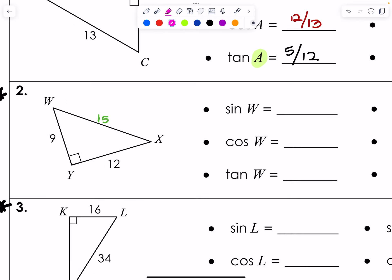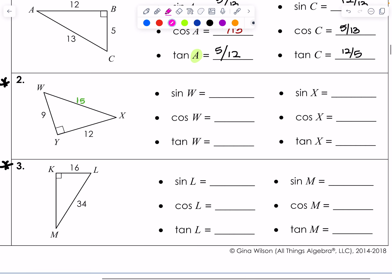So this side is 15. I'll do a few of these. Starting with sine of W — W is right here. Sine is SOH: opposite over hypotenuse. So opposite is 12 over the hypotenuse, which is 15. But the directions say I want it in its most reduced form. The GCF is 3, so divide top and bottom by 3 — or use your calculator: put 12 divided by 15, press Math, select Fraction, press Enter, Enter, and it gives you 4 over 5.